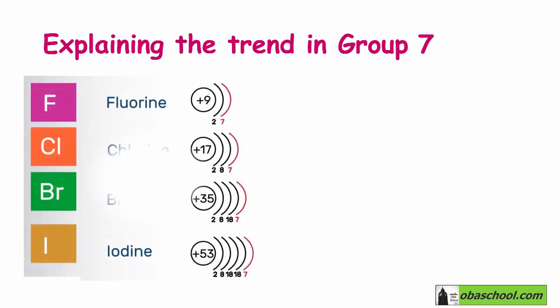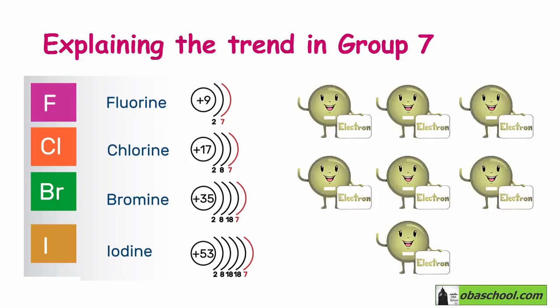Here we have the electronic structures of Group 7 elements, the halogens. Notice that all of them have seven valence electrons, so they have seven outer electrons, and this is because they are in Group 7.